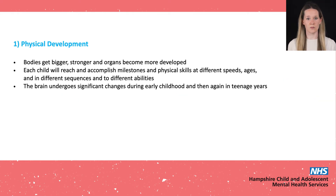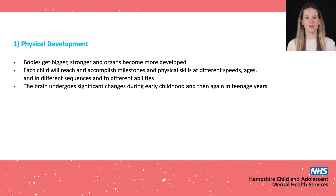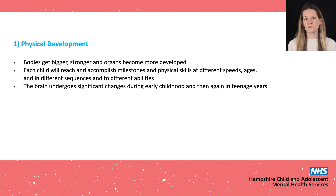The first is physical development. As well as the body growing bigger and stronger as children get older, organs and their functioning become more developed. It is normal and expected that each child will reach milestones such as sitting, walking and talking, and physical skills at different speeds, ages, and in different sequences and to different abilities. The brain undergoes many significant changes during early childhood and then again in the teenage years, which can impact on other areas of development.